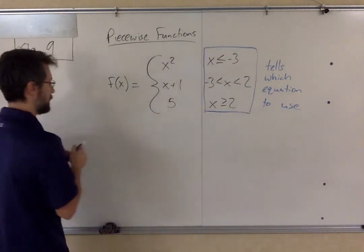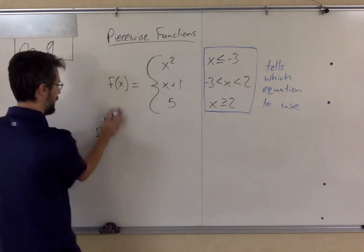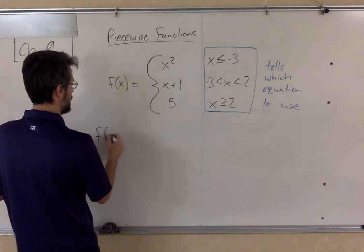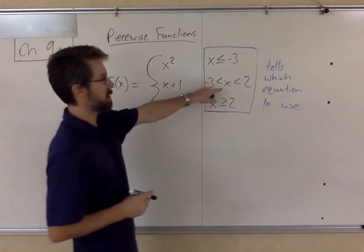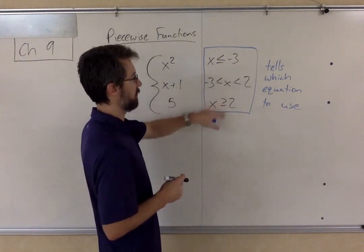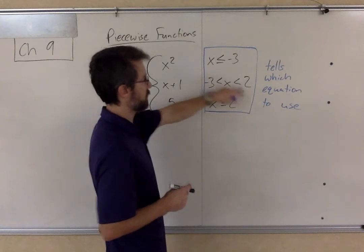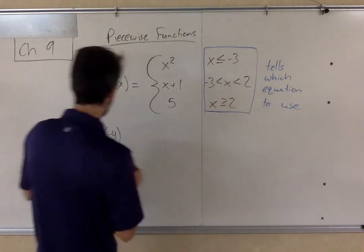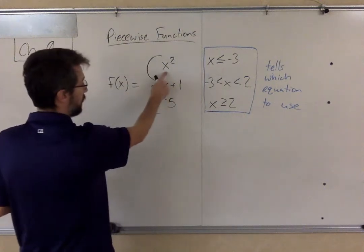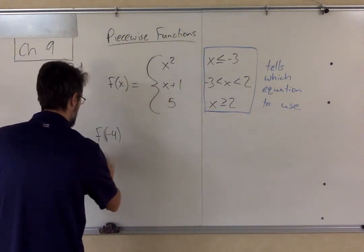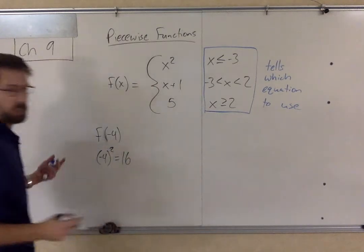So for example, we'll go through a few quick ones here. If we were going to do f of negative four, I would first take that negative four, and I'd look at the inequalities and say, where does negative four fit? Negative four is not greater than two, it's not between negative three and two, it's less than negative three. And so in that case, I would plug in negative four into the top equation and do negative four squared, which is 16.